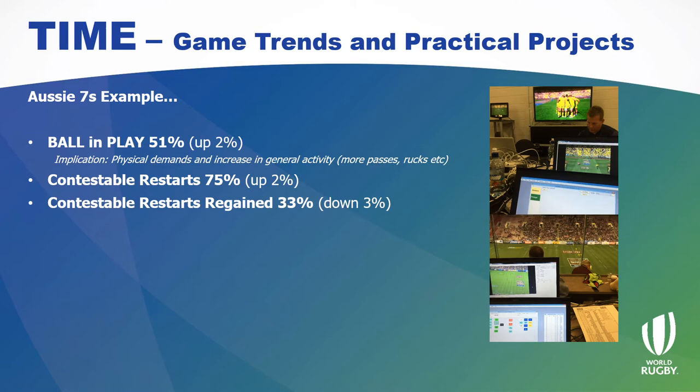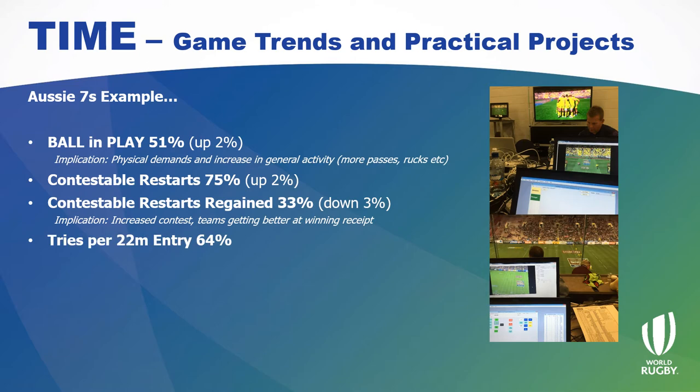The next trend was around restarts. We knew that contestable restarts were going up, but actually regaining the ball was going down — teams were getting better at it. The implication for us was the increased contest and teams getting better at winning their receipt. The project was working with a co-coach from AFL, going through some footage, looking at different techniques where we could exploit a weakness in the opposition or develop our own techniques to shelter the ball being kicked to us a little bit more.